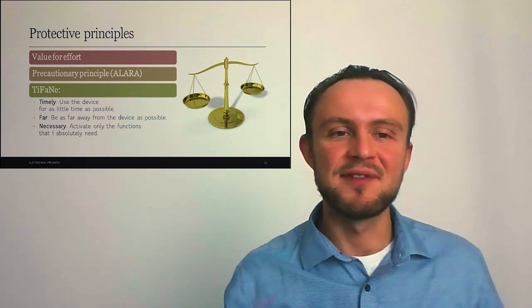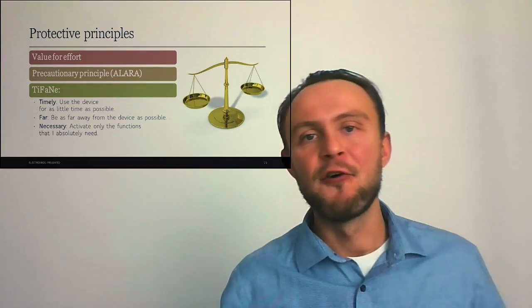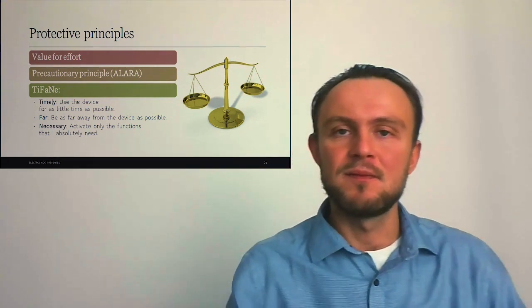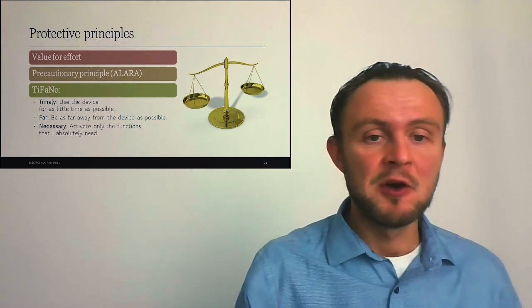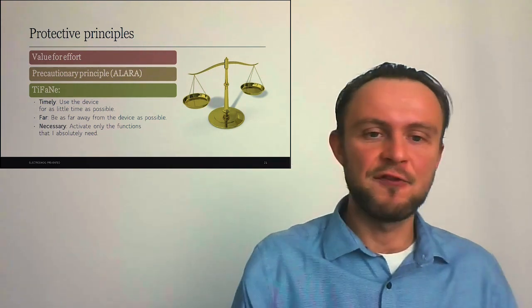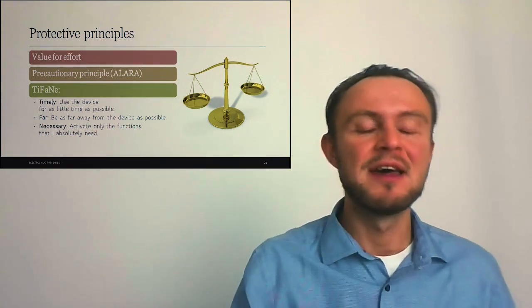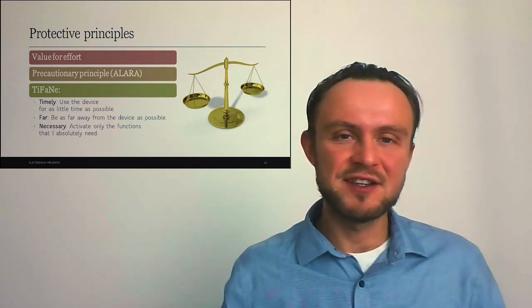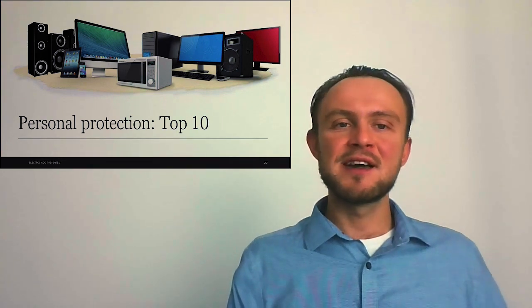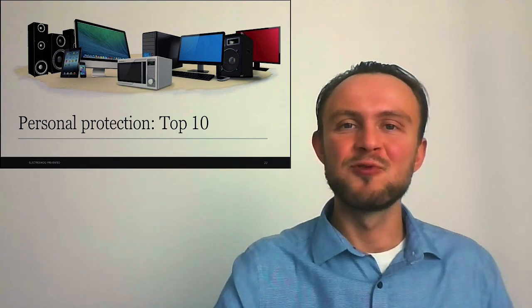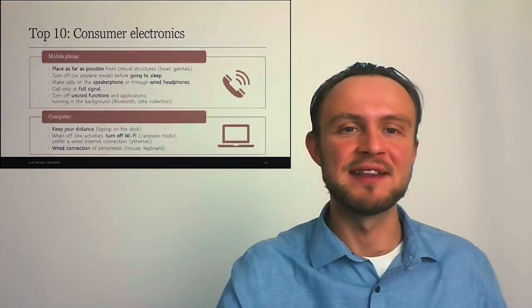Practically, we can use the Typhine rule, which is acronym for timely, far and necessary. We can use the devices for as little time as possible, be as far away from the sources of electromagnetic radiation as possible, and have activated only the functions that we absolutely need. With this knowledge, let's look into particular protection measures for the 10 most risky technologies.